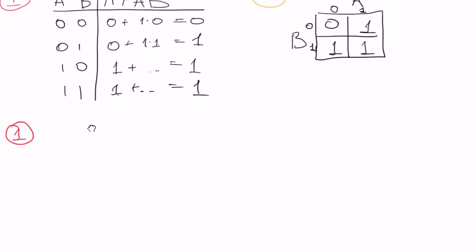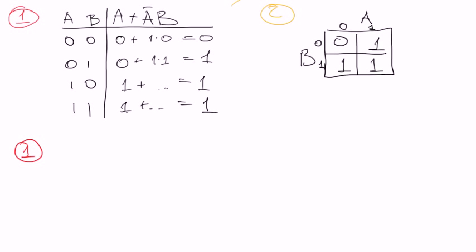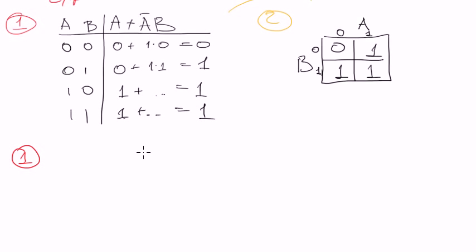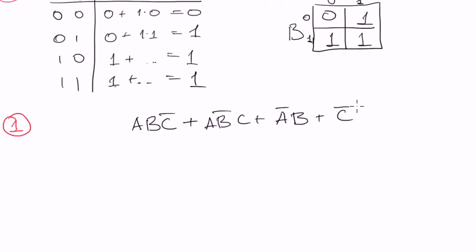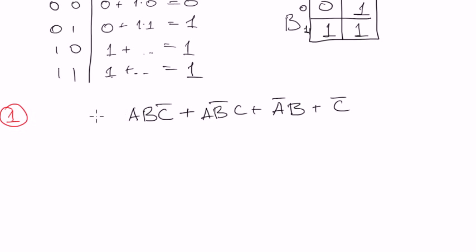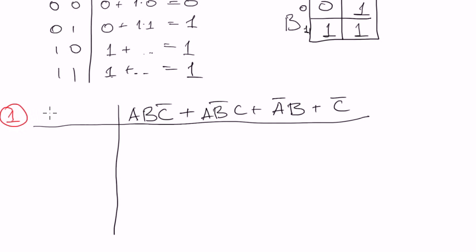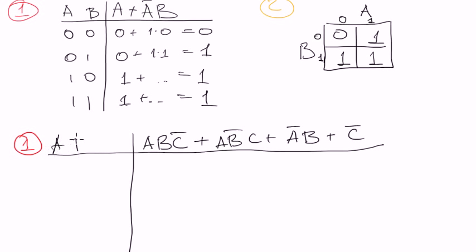Let's do these steps again for some other expressions. Again the first step, but on a different expression — I'll come up with a random one. Let it be: A·B·C-negated plus A·B-negated·C plus A·B plus A-negated plus C-negated. Just a random expression. Let's make a truth table for this one.